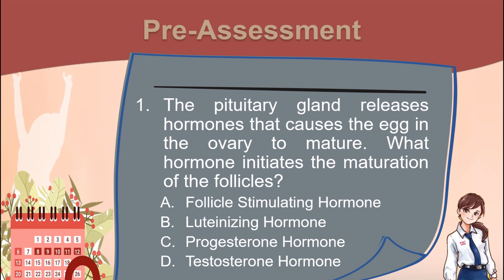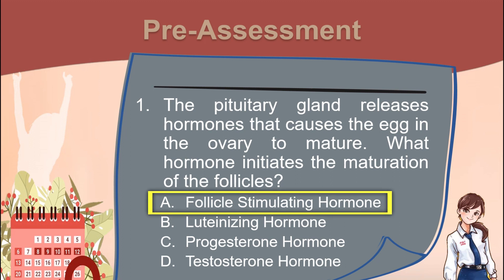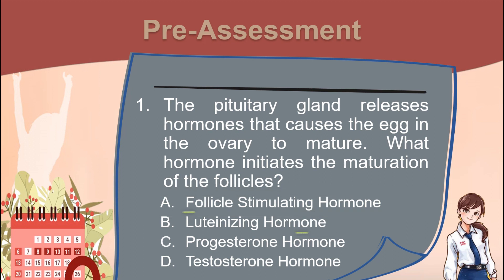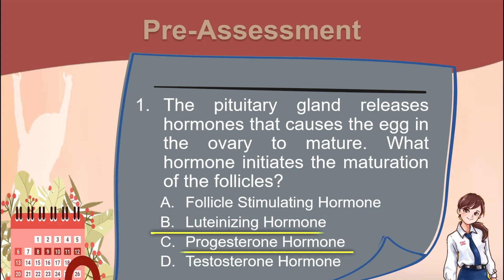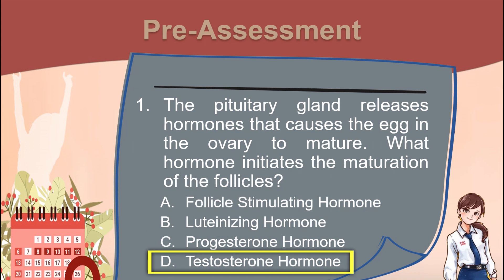Number 1. The pituitary gland releases hormones that cause the egg in the ovary to mature. What hormone initiates the maturation of the follicles? A. Follicle-stimulating hormone. B. Luteinizing hormone. C. Progesterone hormone. D. Testosterone hormone.